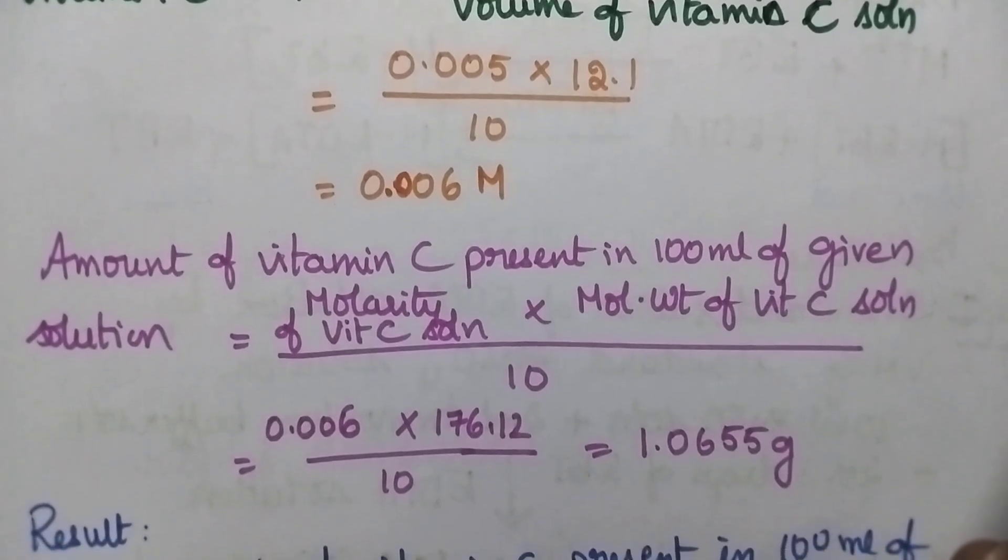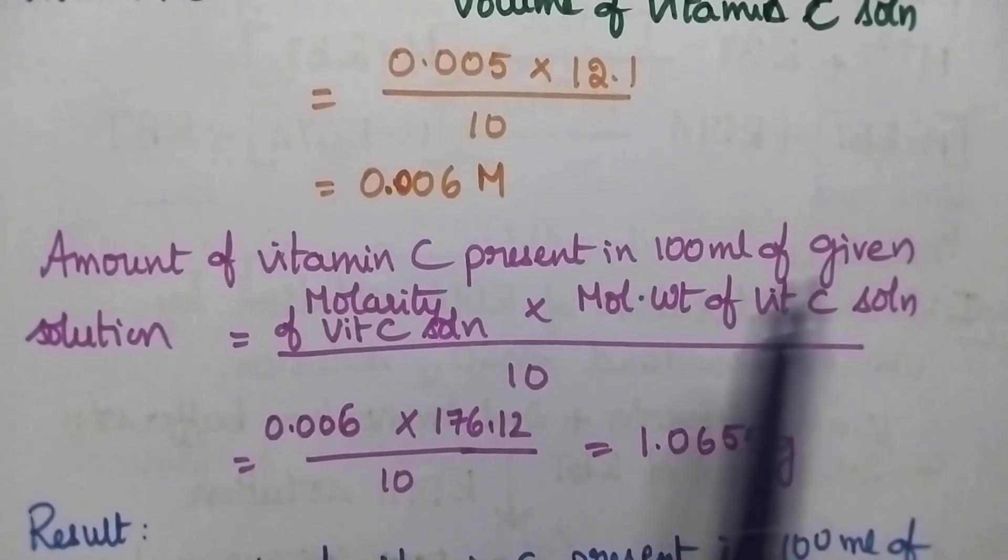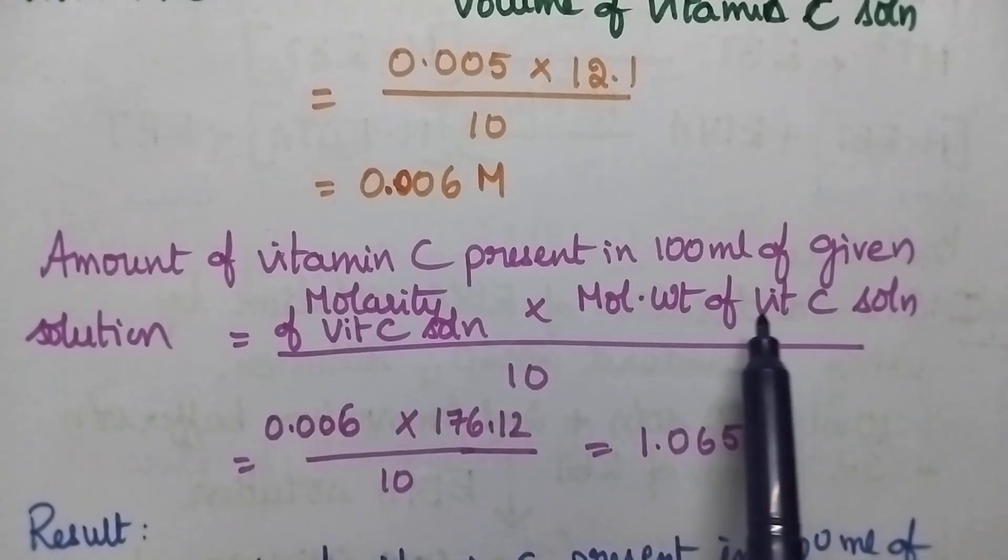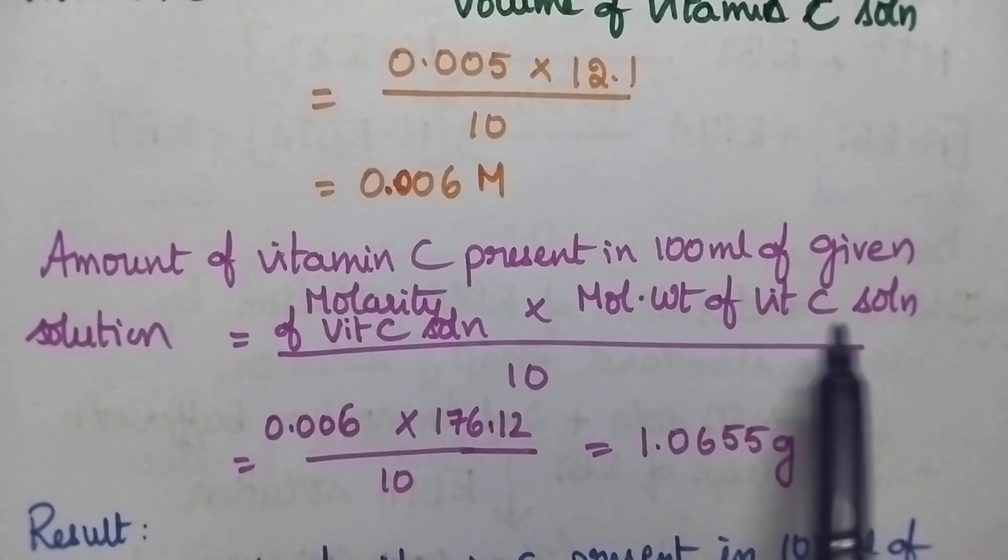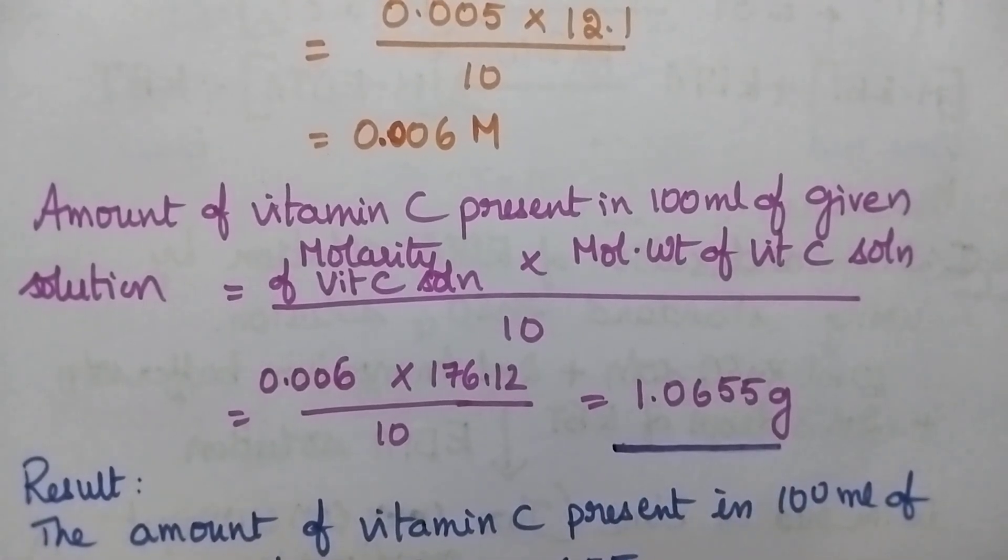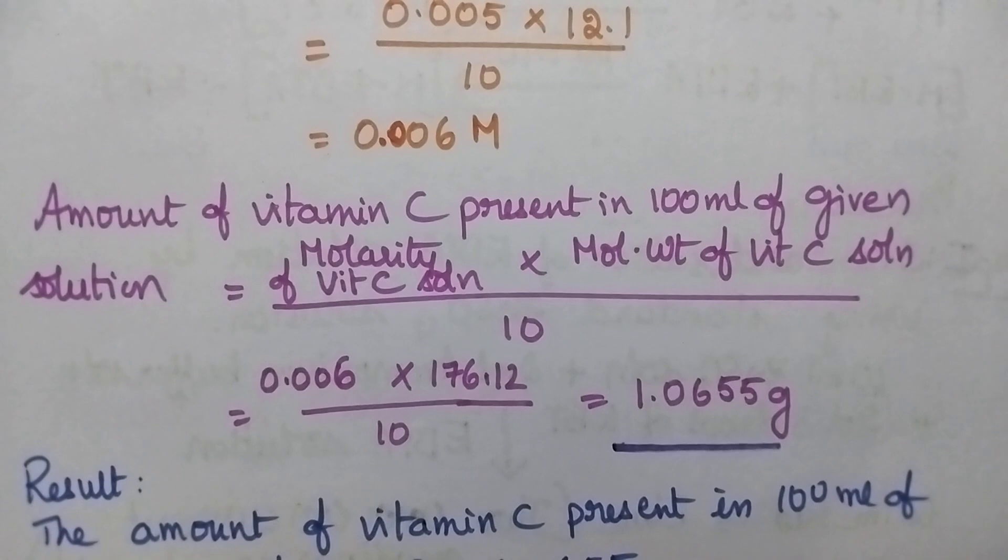For the estimation of amount of vitamin C present in 100 ml of the given solution, we use the formula: molarity of vitamin C solution times molecular weight of vitamin C divided by 10. On substituting, the amount of vitamin C is obtained as 1.065 grams.